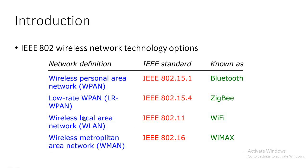The other is the wireless local area network, known as WLAN, using the IEEE 802.11 standard, and this technology is known as Wi-Fi. The other is the wireless metropolitan area network, also known as WMAN, using the IEEE 802.16 standard, and that is known as WiMAX.